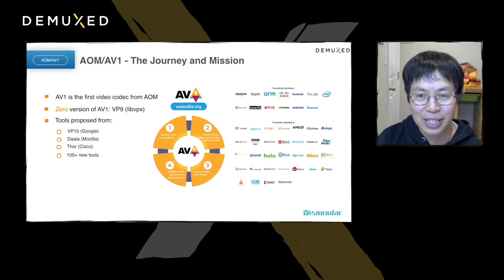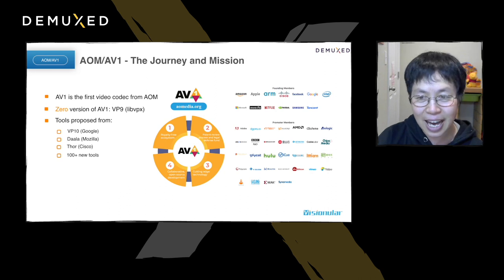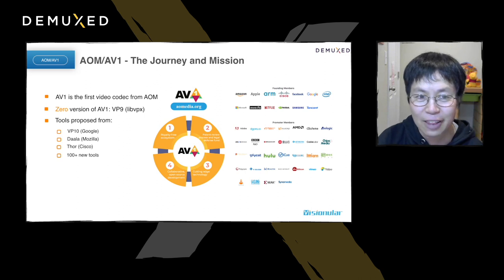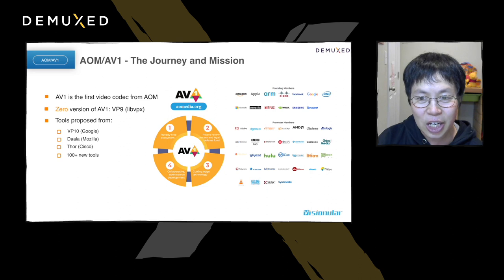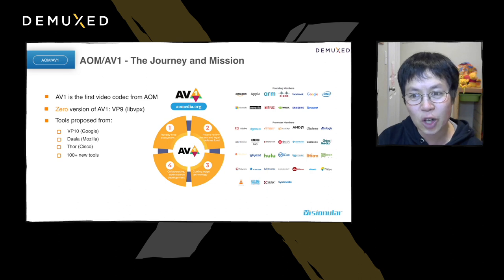Let's have a brief overview of AV1's current status. AV1 right now has 45 members globally. The zero version of AV1 came from VP9, and the tools of AV1 were originally proposed from VP10 of Google, Daala of Mozilla, and Thor of Cisco. Compared to VP9, AV1 has included more than 100 coding tools, making it not only a royalty-free codec standard, but also representing some of the most advanced codec technologies in the field.